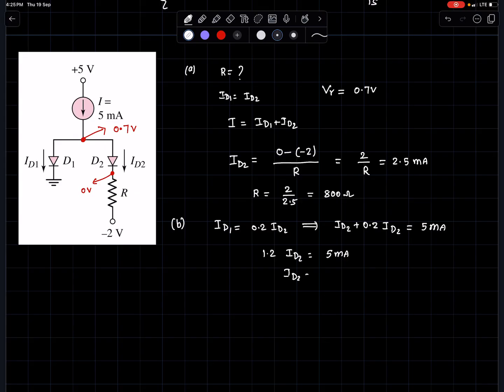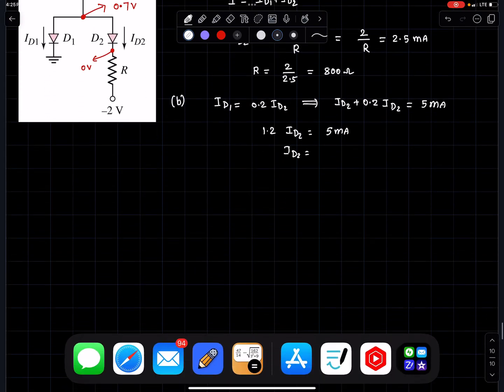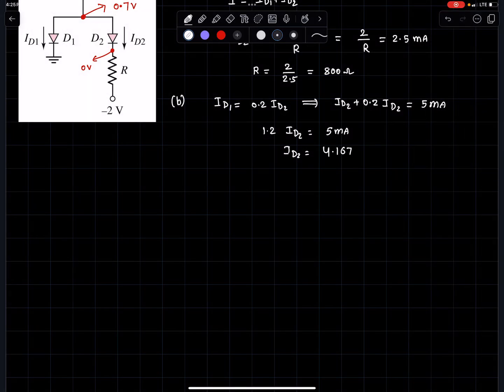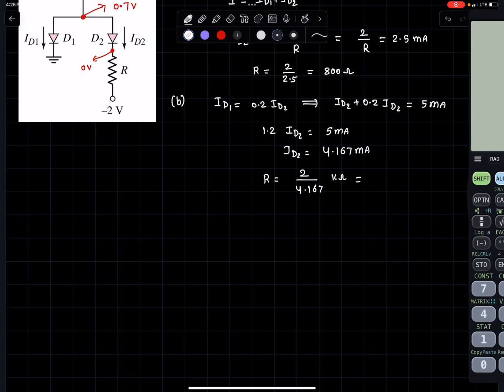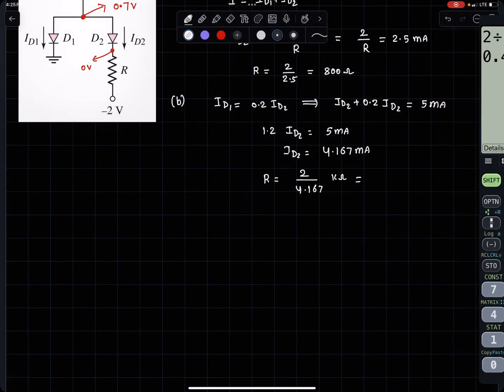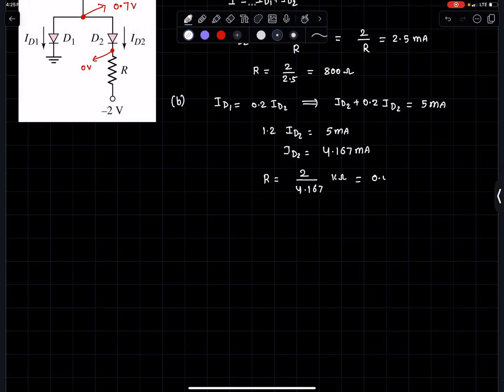Let's use a calculator. 5 over 1.2 is 4.167 milliamperes. So R must be 2 over 4.167 milliamperes, which equals 0.479 kilo-ohms, or approximately 479 ohms.